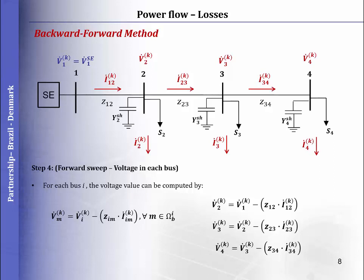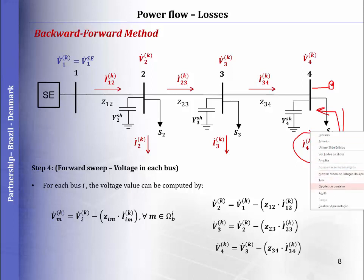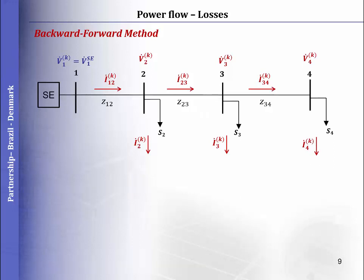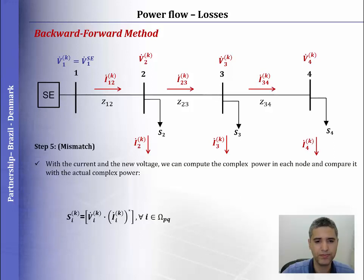If we have a generator, for example, the current injection may flow in the opposite direction. The method can be easily adapted for other systems and applications.